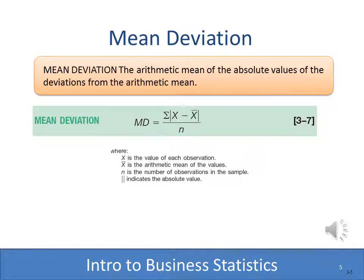In addition to the range, we're also going to work with the mean deviation. Here you see the formula, and it looks a little complex the first time you see it, but it's not that big a deal. The mean deviation is simply the sum of the absolute value of each value x minus the mean, and then you divide that by the number in the sample. We'll see an example of that in the next slide.